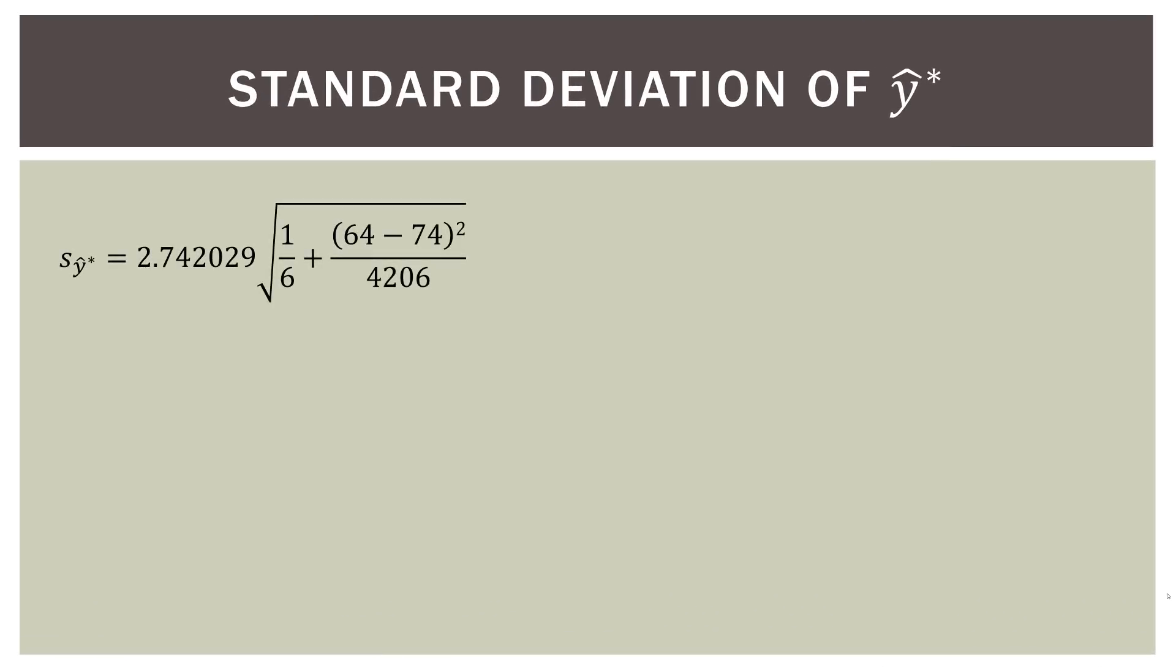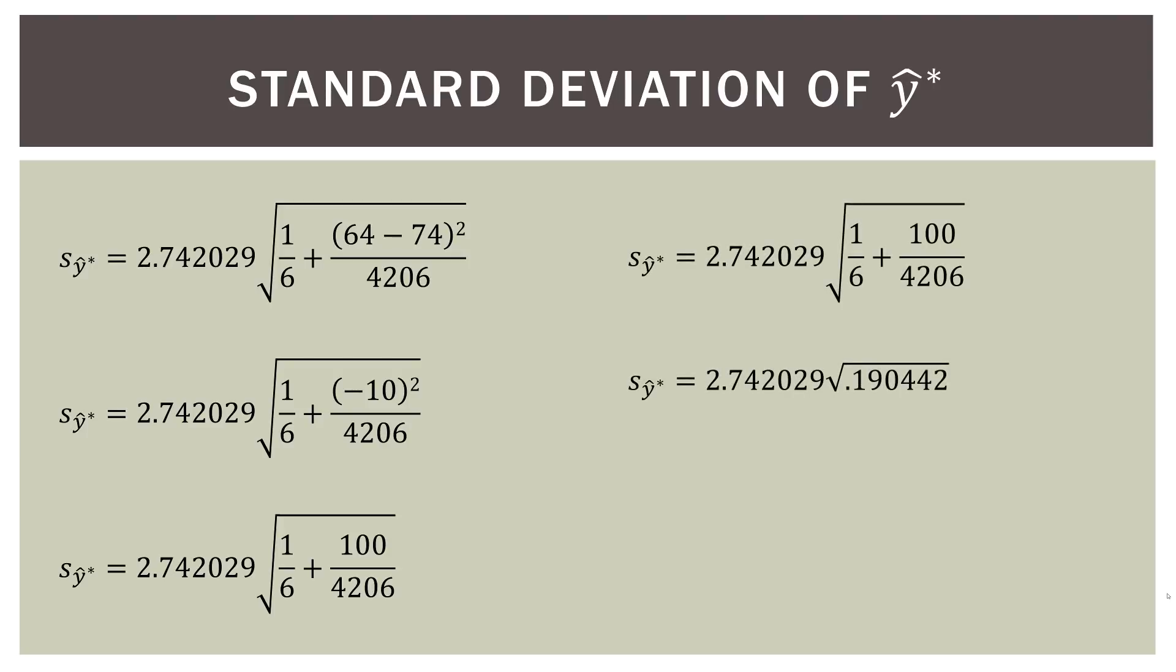Right, so we go ahead and do that. We do our subtraction in there. Then we square it. So we have negative 10 squared. Go ahead and continue on. We do under the square root sign. So we have 2.742029 times the square root of 0.190442. We go ahead and do the square root and then the multiplication. And then we get a standard deviation of y hat star of 1.196613.